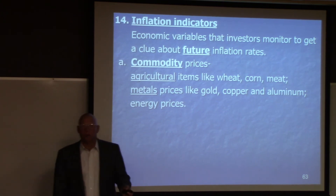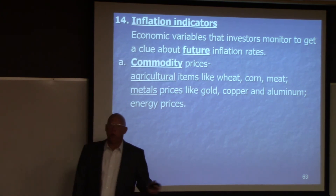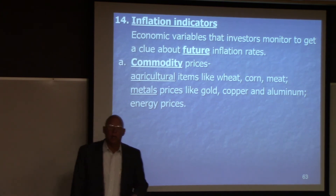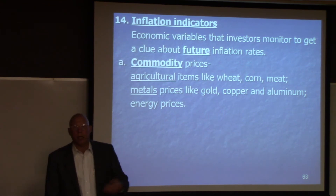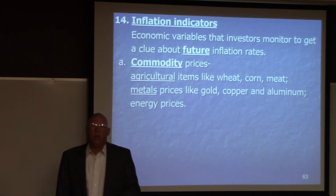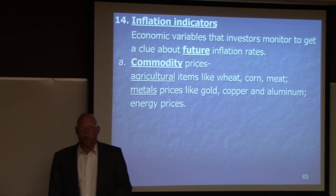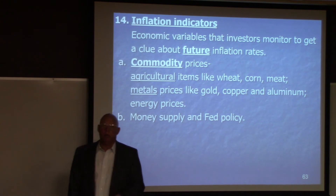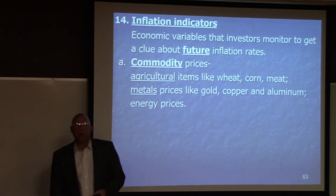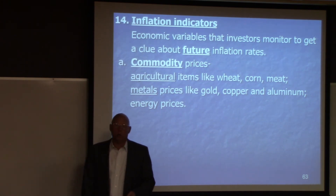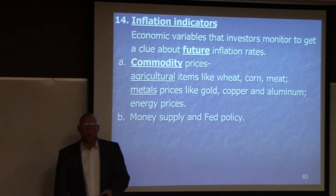Commodities include agricultural items like wheat, corn, and meat, metals prices like gold, copper, and aluminum, and energy prices like oil and gas. So commodity prices give us an idea of what's going on with inflation. Also watch the Fed policy.